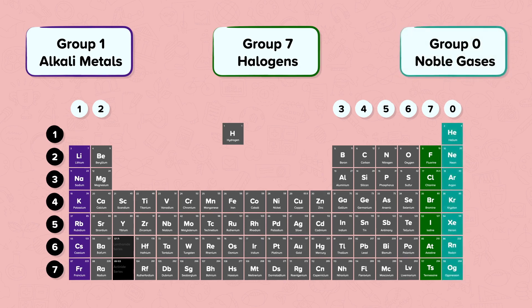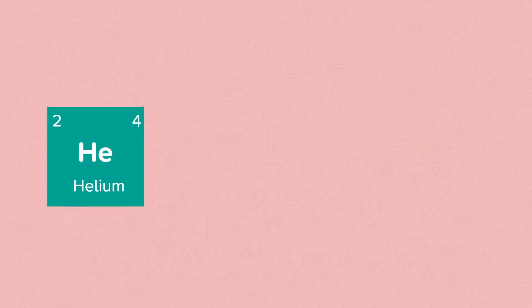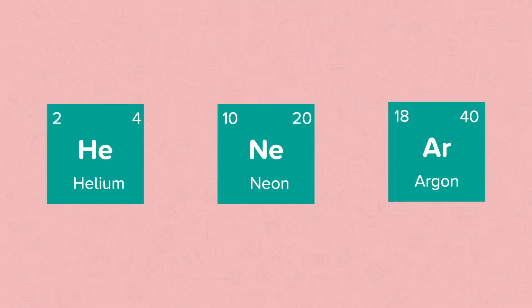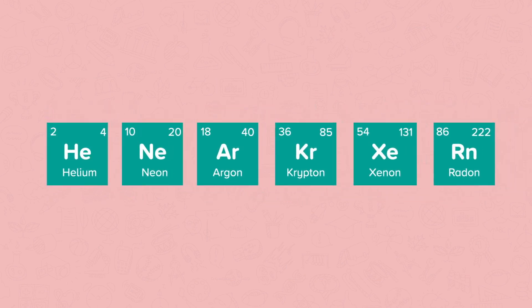The elements in group 0 of the periodic table are called the noble gases. The elements in group 0 that you need to know about are the first three. These include helium, neon and argon. The other group 0 elements are krypton, xenon and radon. They are all gases at room temperature.